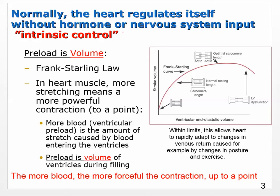Normally the heart regulates itself. We know that it has autorhythmic cells so it beats, but there's another aspect of the heart controlling itself: when there's not very much blood in the heart — so it's not stretched out very much — it has a weaker contraction. That's because the actin and myosin are kind of pushed together, and some of those myosin motor proteins don't have a good grip.